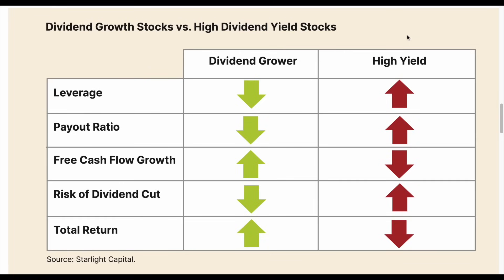Looking at more key differences between dividend growth and high-yield investments: first is leverage — high-yield stocks typically have higher debt levels, and you'll want to avoid the ones with unhealthy debt levels. Payout ratio is another key one — dividend growth stocks typically have lower payout ratios. A company generates free cash flow and can reinvest back into the business, pay down debt, buy back shares, pay out dividends, or attempt mergers and acquisitions. Dividend growth stocks have low payout ratios because they don't use all of their free cash flow to pay dividends — they reinvest a lot of it back into the business, which allows them to pay more in dividends the next year. High-yielding stocks, on the other hand, use the majority of their free cash flow to pay out dividends.